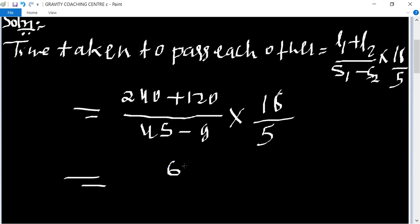360 upon 36 into 18 upon 5. So 36 divided by 5, so 18 into 36.